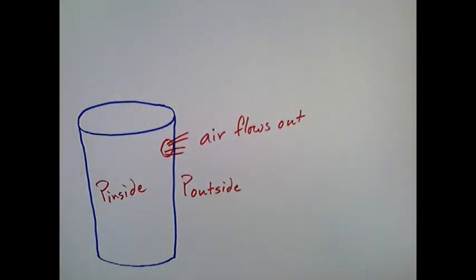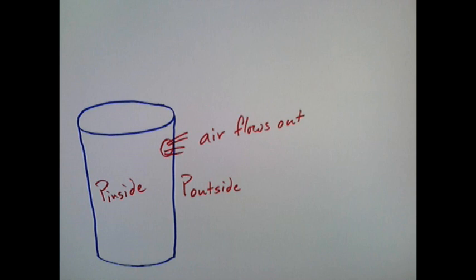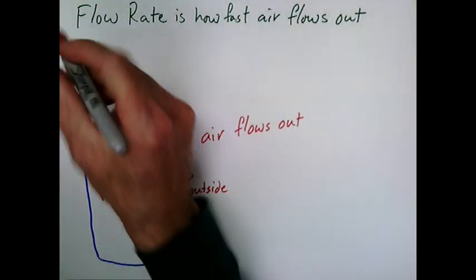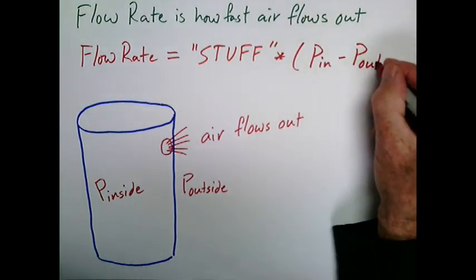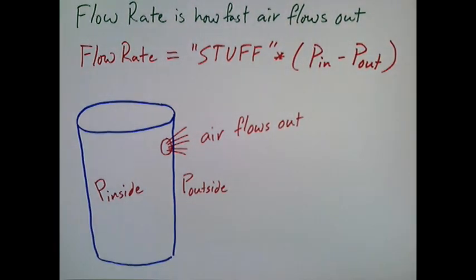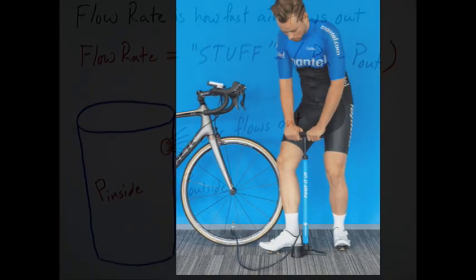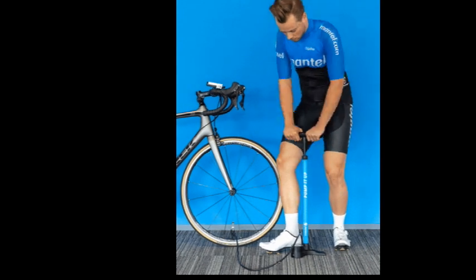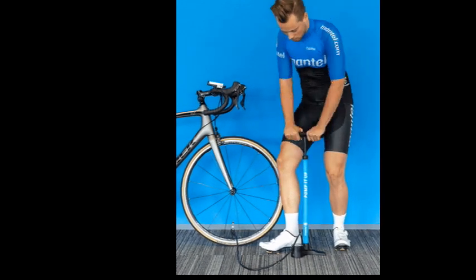When we drill a well into a gas reservoir, or open the valve on our scuba diving tank, gas flows out because the reservoir pressure inside is greater than the pressure outside. The flow rate, or how fast the gas flows out, is equal to a whole bunch of stuff times the pressure difference between the inside and the outside of the reservoir. The greater the pressure difference, the higher the flow rate. In fact, if you make the outside pressure greater than the inside pressure, you will push air into the vessel, just like pumping up a bike tire.